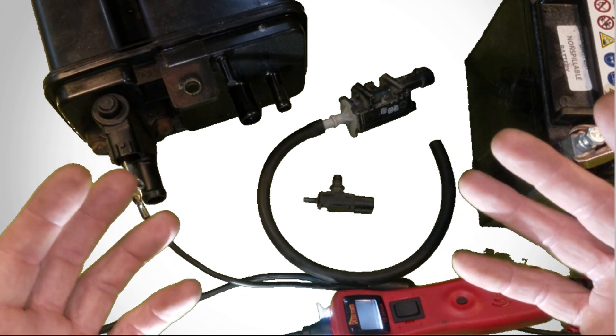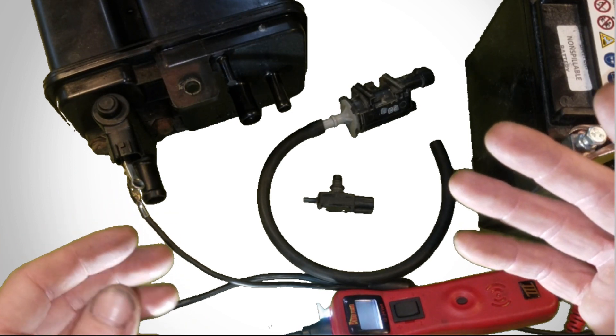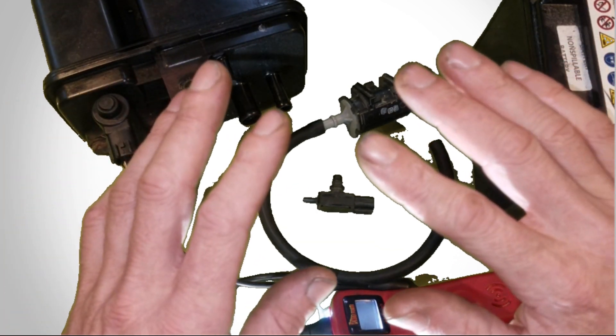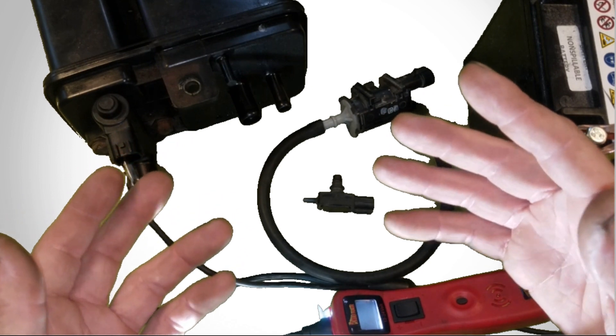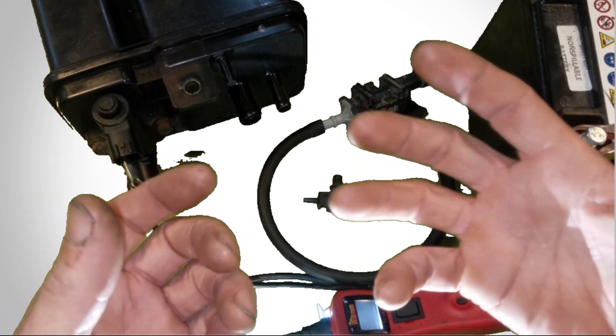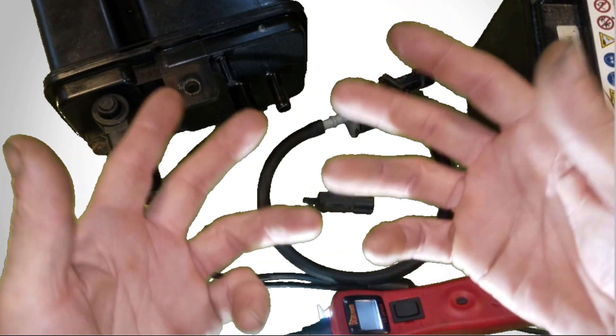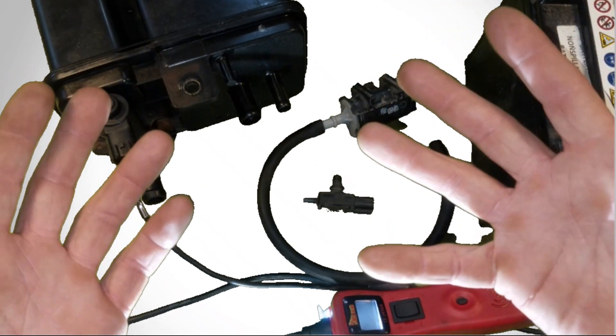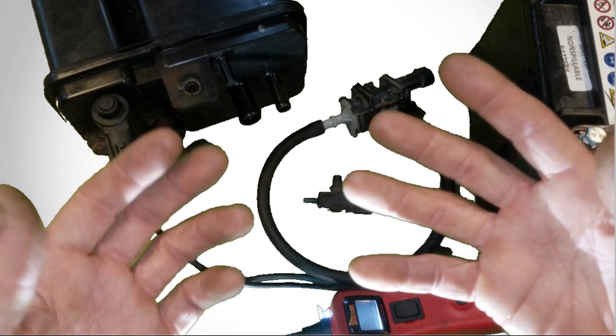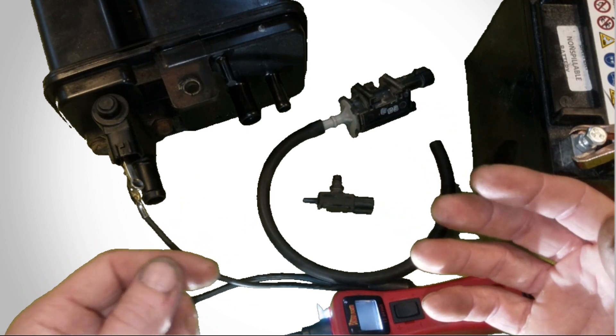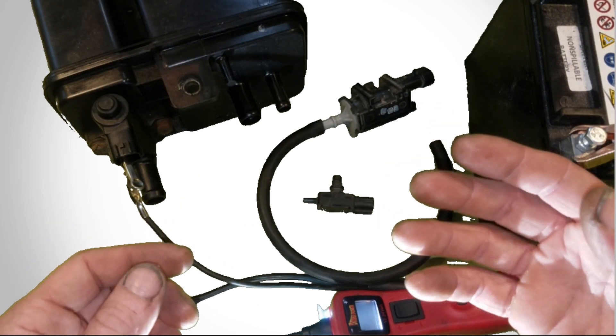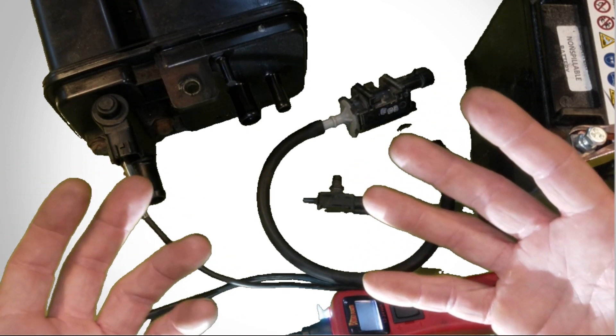One thing I would definitely recommend doing before anything else is first just scan your vehicle for codes. Get yourself a little handheld scanner so you can get codes and clear codes. You can get them relatively cheap, I think 30-40 bucks on Amazon. I'll be sure to leave a link below in the video description.